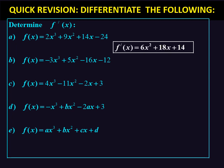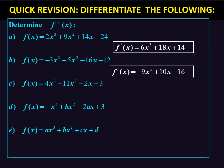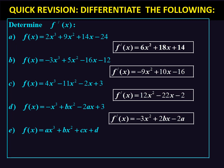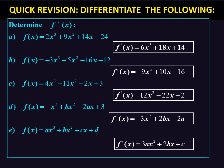Let's check your answers. First: six x squared plus 18x plus 14. What happened to the negative 24? The derivative is zero — the gradient of a constant is zero. Next: negative nine x squared plus 10x subtract 16. Be careful with the negative. Then: 12x squared minus 22x minus 2. Be careful here: negative 3x squared plus 2bx minus 2a. The last one: 3ax squared plus 2bx plus c. Good — you need to be able to use your differentiation.